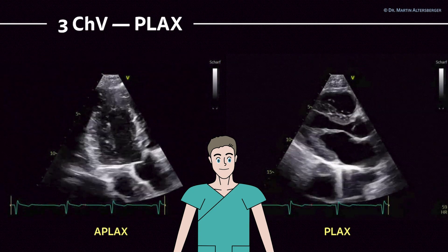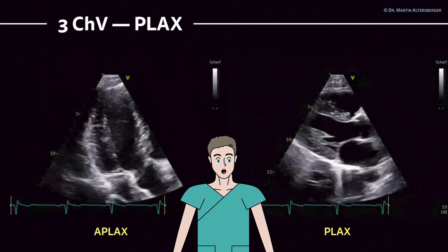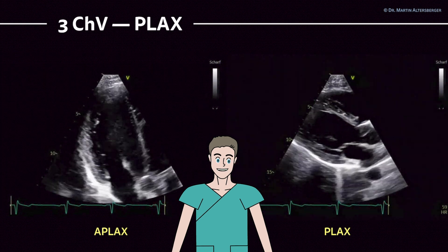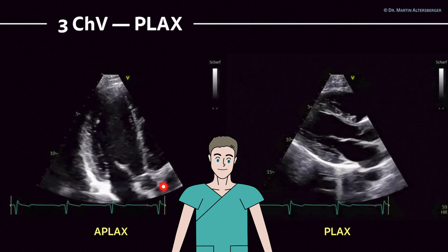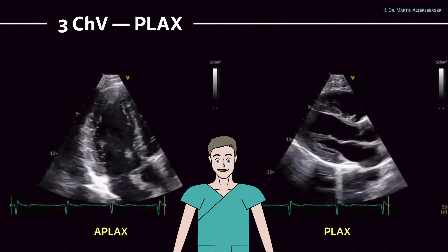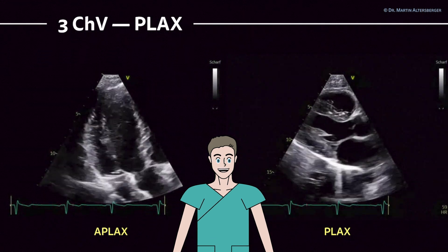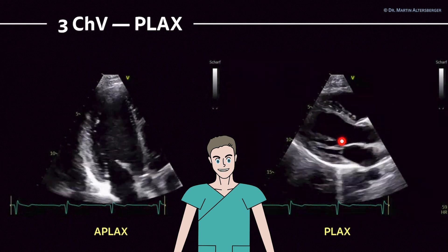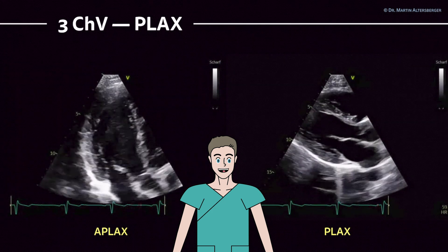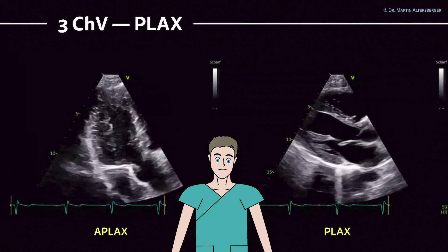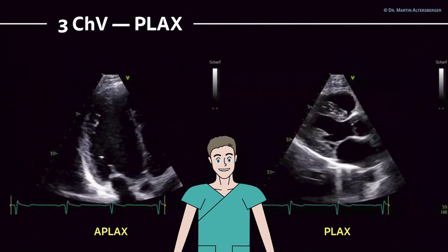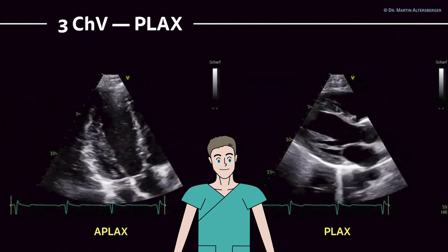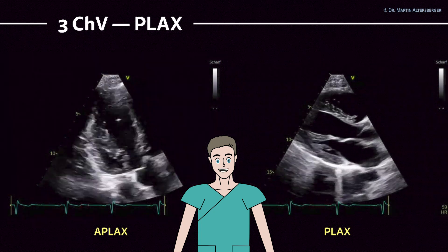The apical long axis view resembles the parasternal long axis. Here you have the apical long axis with the mitral valve — the anterior and posterior mitral valve leaflets — the aortic valve, ascending aorta, the right ventricle, parts of the tricuspid valve, the left ventricle, and the left atrium. The same structures are visualized in both views, just with different angulation and focus.